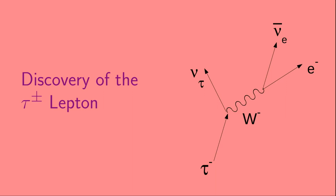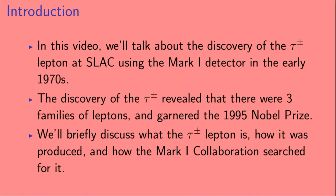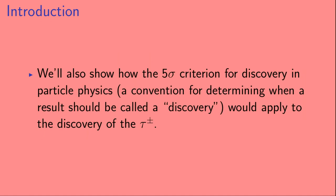Welcome to Discovery of the Tau Lepton. In this video, we'll talk about the discovery of the Tau Lepton at the Stanford Linear Accelerator Center using the Mark I detector in the early 1970s. The discovery of the Tau revealed that there were three families of leptons and garnered the 1995 Nobel Prize. We'll briefly discuss what the Tau Lepton is, how it was produced, and how the Mark I collaboration searched for it. We'll also show how the 5-sigma criterion for discovery in particle physics would apply to the discovery of the Tau.